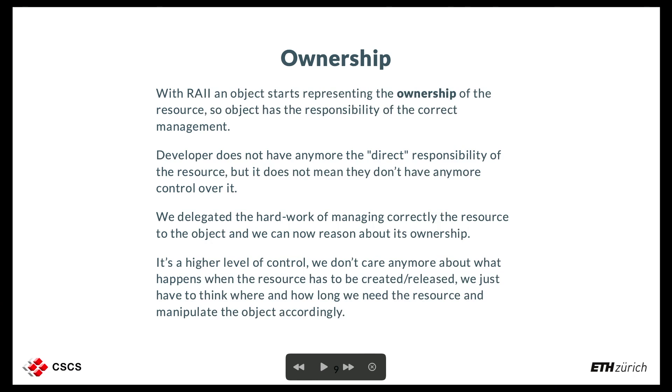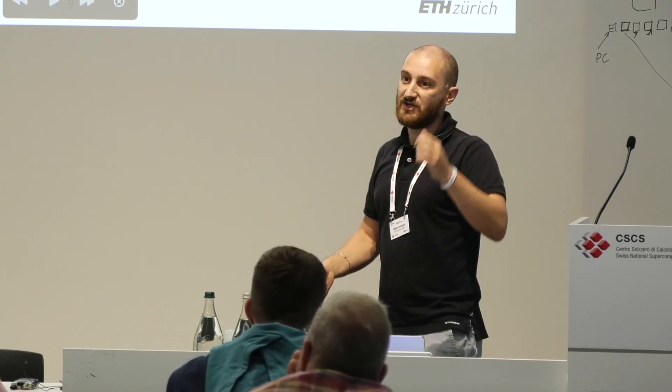The object starts representing the resource and also represents ownership of it. So whatever happens to the object, we have to think that it is happening to the resource too. These two concepts — RAII and ownership — are an abstraction. We are still thinking about resources and still have to do everything we had to do before, but we are relying on the language to let it do what is correct for the object.